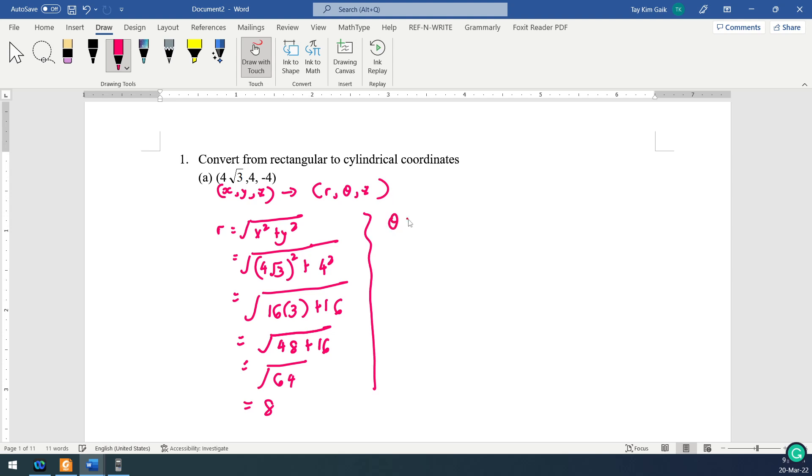And the theta is tan inverse of y over x. Y is 4, x is 4√3. So you have tan inverse 1 over √3. This is a special angle, pi over 6. Sin pi over 6 is half. So tangent 1 over √3, tan pi over 6 is 1 over √3.